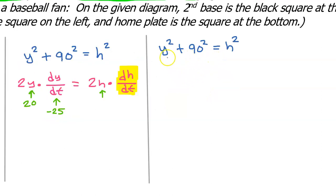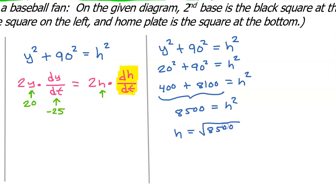But we can find h using the Pythagorean theorem. At the moment in question, remember that y is 20. So we actually have 20 squared plus 90 squared is equal to h squared. So this is 400 plus 8,100 is equal to h squared. So taking the square root of both sides, h is the square root of 8,500. So we can put that in for h right here. So let's go ahead and make these three substitutions.